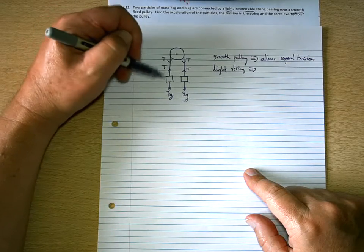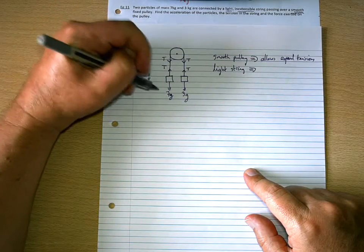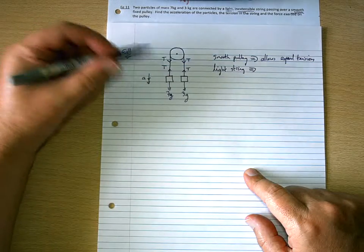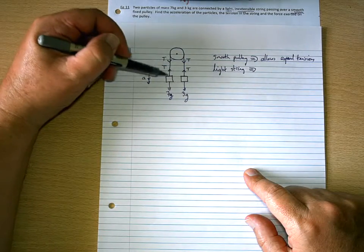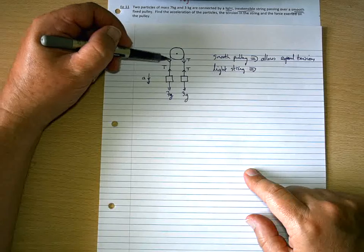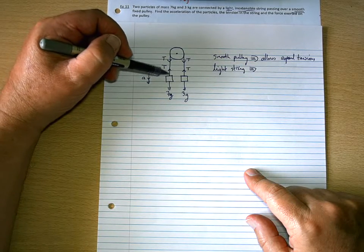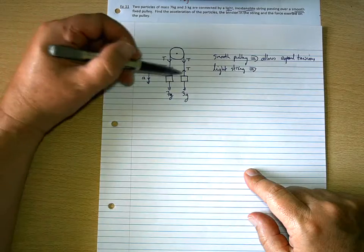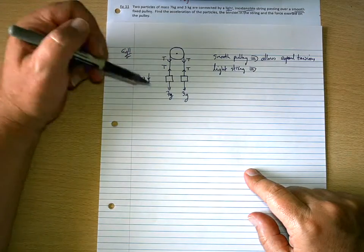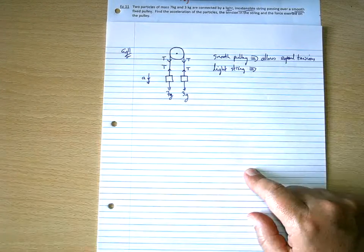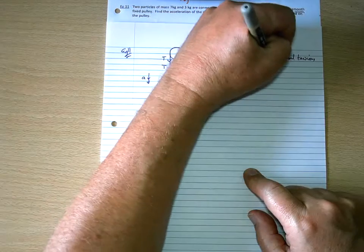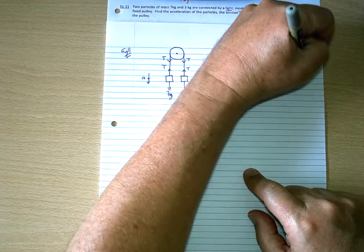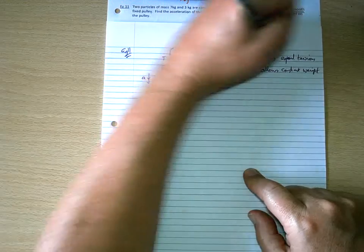If it wasn't, then as this starts to fall to earth, and it will fall in this direction, because that's heavier, as more and more string comes this side of the pulley, then the mass on that side will increase. So, the masses aren't constant, or the weights aren't constant. So, the light string allows constant weight in the system.